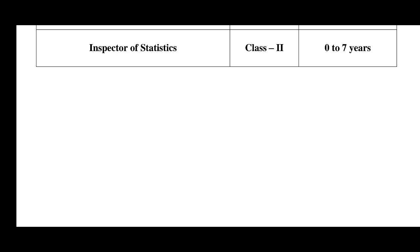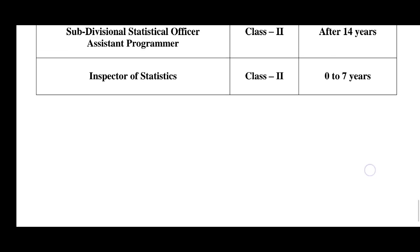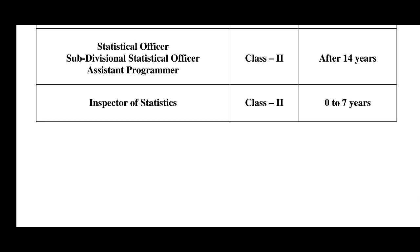The Inspector of Statistics is a Class 2 post and will be qualified for the next promotion. A minimum of 7 years of service qualifies the Inspector for the next promotion to Statistical Officer, Sub-divisional Statistical Officer, and Assistant Programmer. This is true for approximately 6 years at each level.